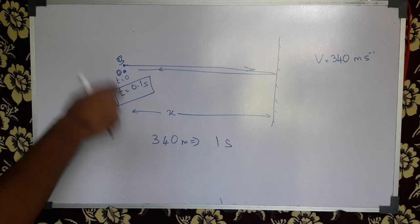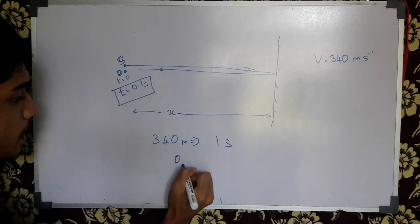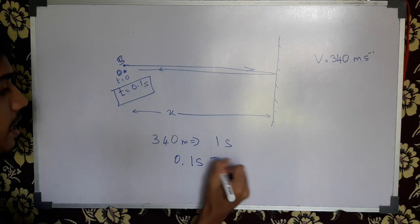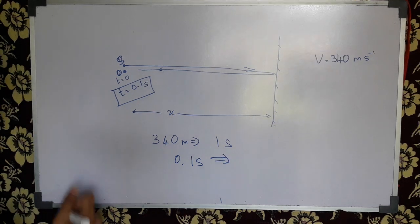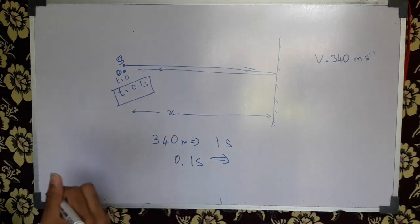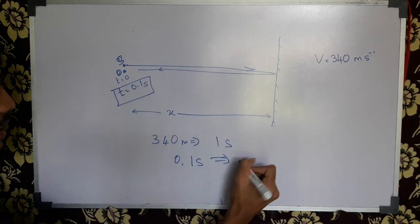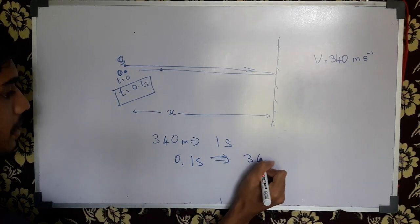We will say 0.1 second level is 5 meters. 0.1 seconds, 1 second, 30 meters, 0.1 seconds — 34 meters.